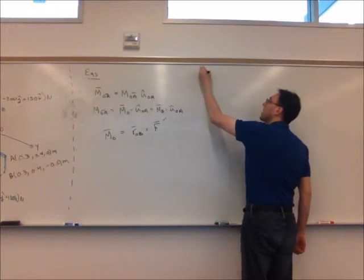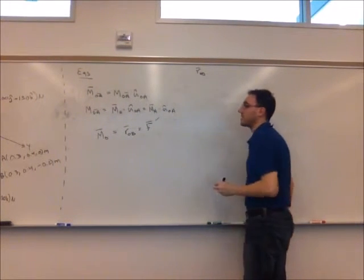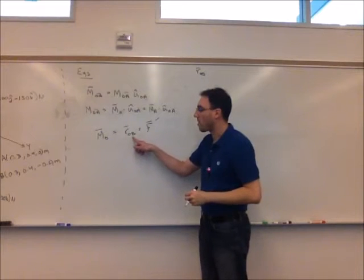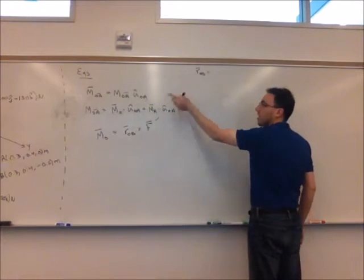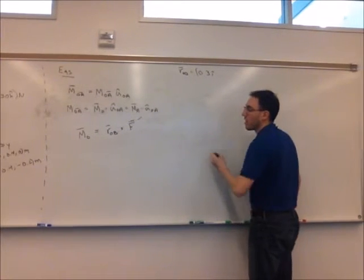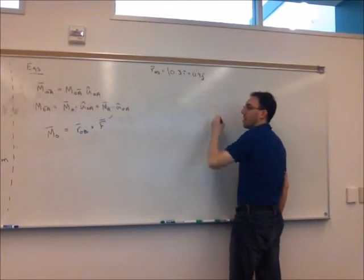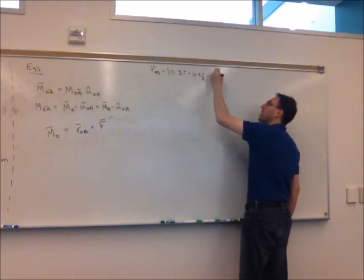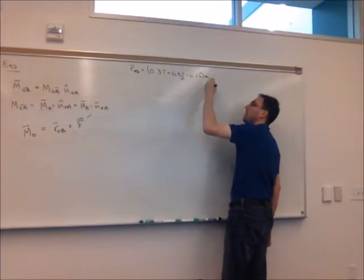But we can find it very quickly. And again, this is the advantage of taking the moment about the origin. R_OB is going to be easy to find. It'll just be the coordinates of B. So 0.3i plus 0.4j minus 0.2k meters.